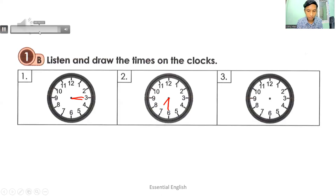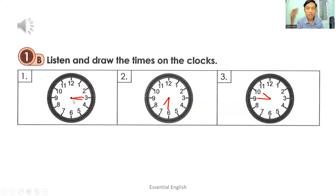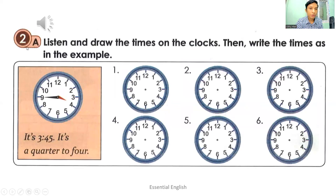The last picture: it's a quarter to ten. You have to draw an hour hand and a minute hand. Now I think you know how to draw the times on the clocks. If you have an analog clock, you can look at the clock and tell the time by changing the minute and hour hands to different directions.